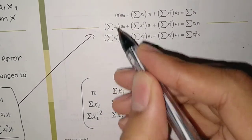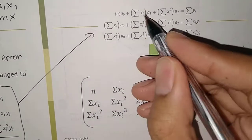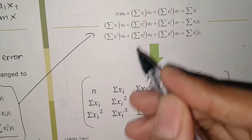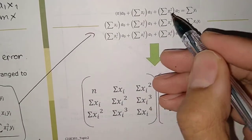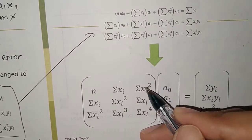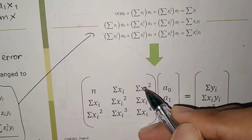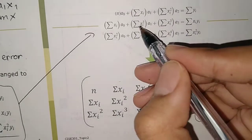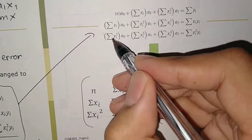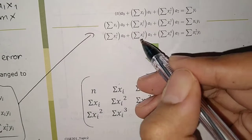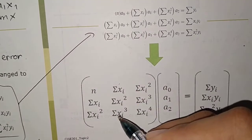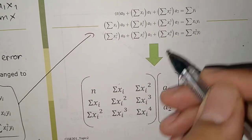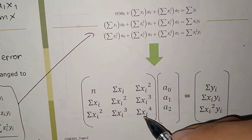So we have N here, and we will have N here. Then Sigma Xi and Sigma Xi again. And then the corresponding terms go here, here, and sigma X to the power of 4 will be in this position.